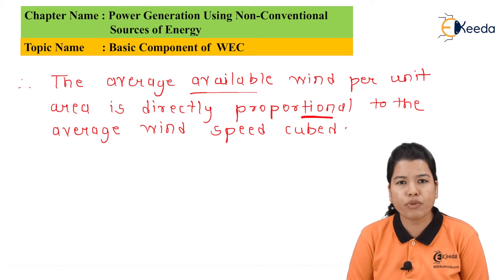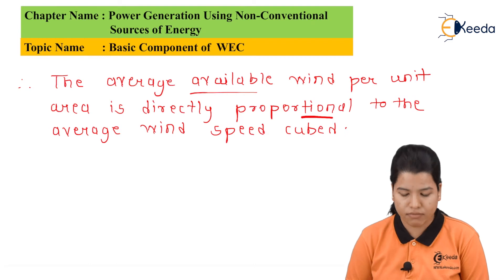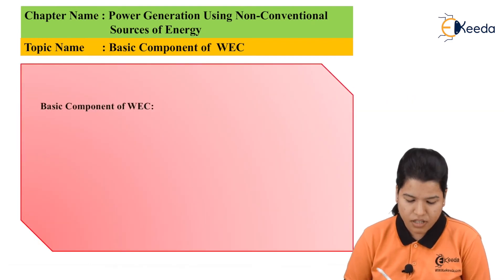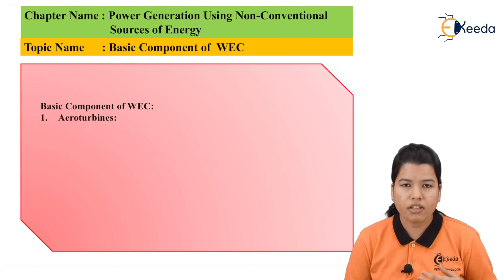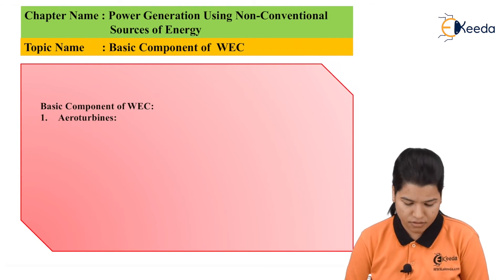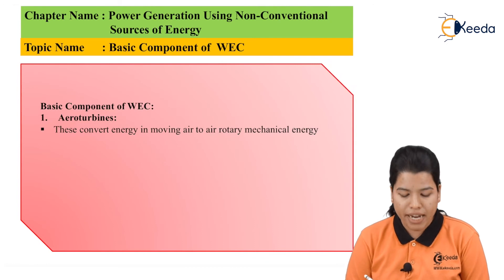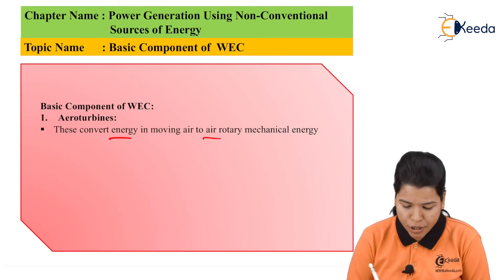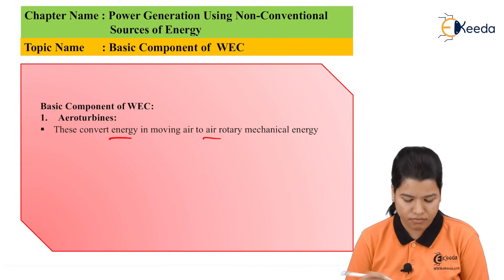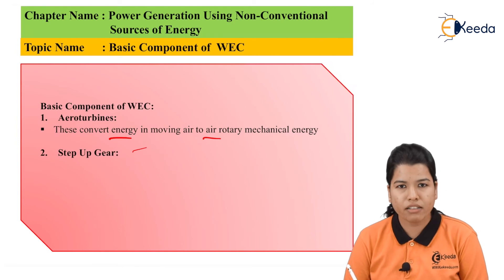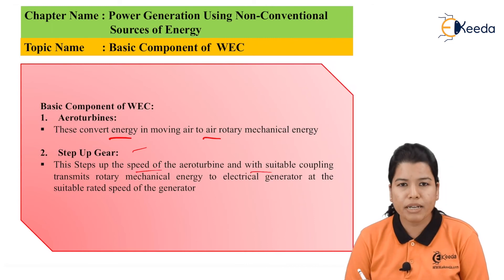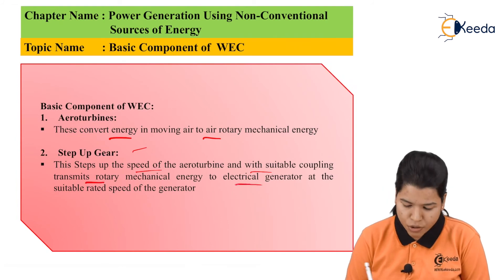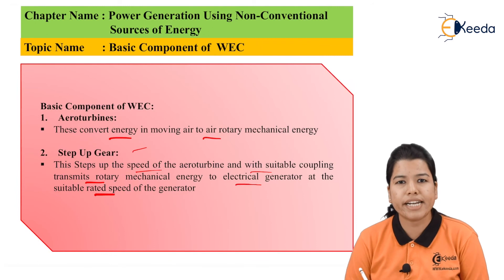So in this way, we have seen the equation for the wind energy conversion. Now let us see what are the basic components of WEC. The first component of WEC is the aero turbine. The main function of the aero turbine is to convert the energy in moving air to rotary mechanical energy. The second component is the step-up gear. The step-up gear is used for stepping up the speed of the aero turbine with suitable coupling, which transmits the rotary mechanical energy to the electrical generator.